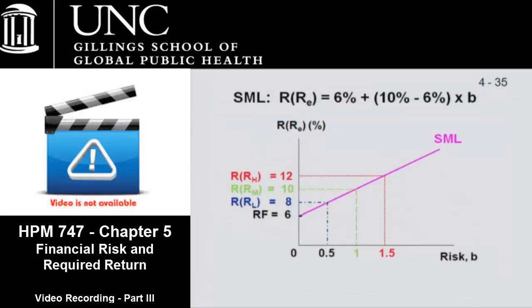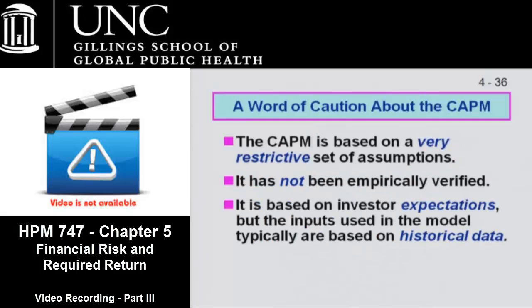We can then graph these three things to construct the security market line. Beta is on the horizontal axis and the required rate of return is on the vertical axis. All this shows you is that at different levels of risk there are different levels of required rate of return. Remember, risk is not bad — you might be very content to invest in H if you get a 12% rate of return, if the amount of risk you're assuming is compensated for by return.